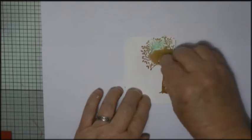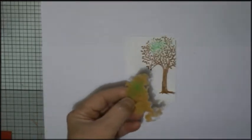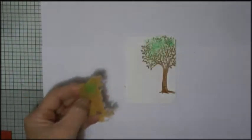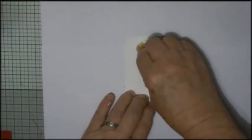I'm starting with a pre-gessoed card and stamping this tree. Then I've got a piece of natural sponge, and I'm sponging this green paint all over it to represent leaves.